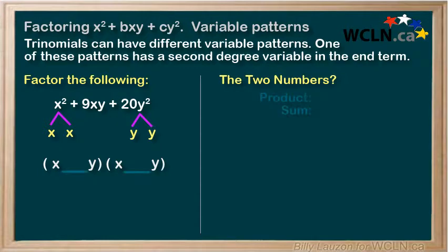Now we are looking for two numbers whose product is positive 20 and whose sum is positive 9. Let's find the possible products that will make 20.